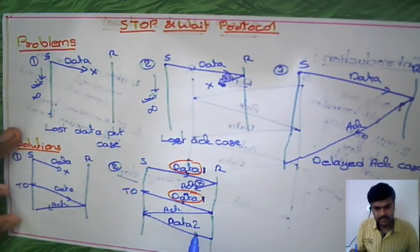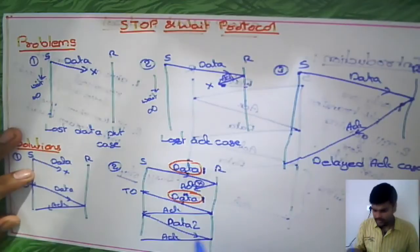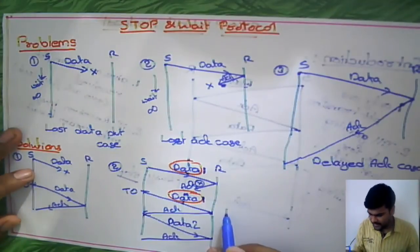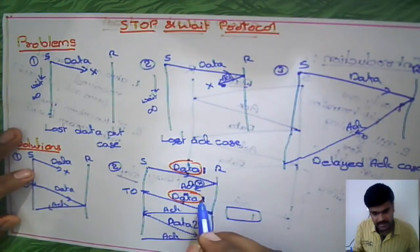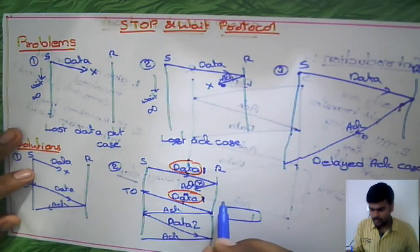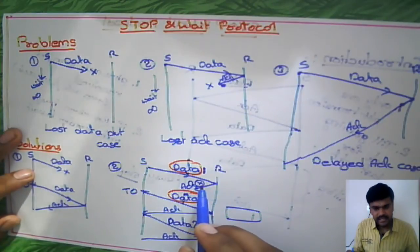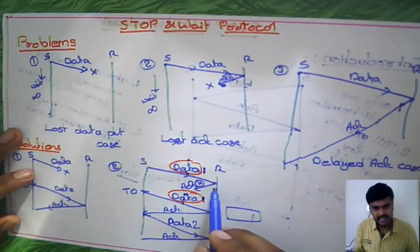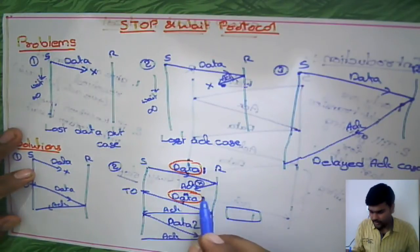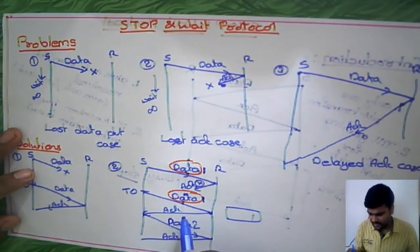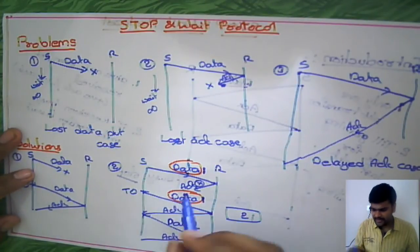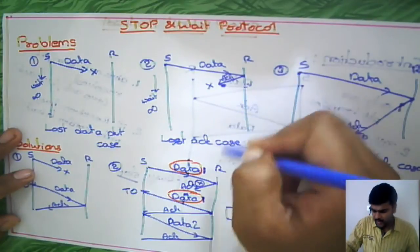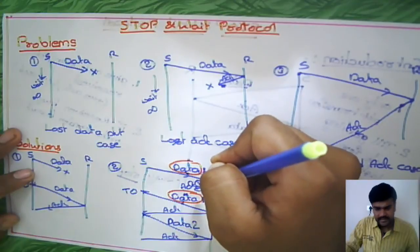The sender sends data packet 2 and the receiver gives acknowledgement. Now, data packet 1 is already in the receiver's buffer. When the same data packet arrives again with the same sequence number 1, the receiver knows that maybe the acknowledgement was lost last time. So it ignores the duplicate packet, gives acknowledgement again, and once the acknowledgement is received, the sender transmits the second packet. This solves the lost acknowledgement case using sequence numbers.